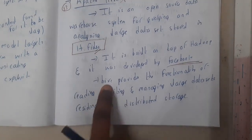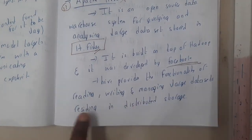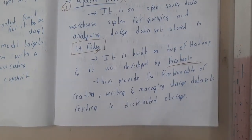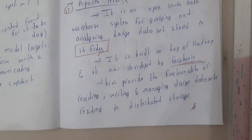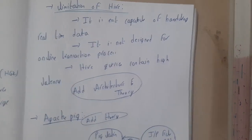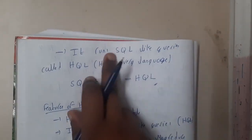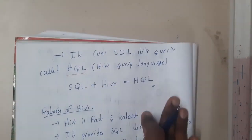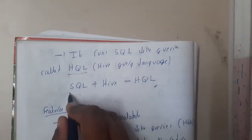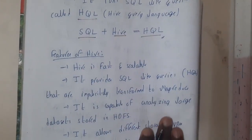Hive provides the functionality of reading, writing, and managing large databases residing in a distributed system. You might wonder what is the use of SQL if Hive does the same things. Hive works with the help of SQL — it runs SQL-like queries called HQL, which stands for Hive Query Language. So SQL combined with Hive gives you Hive Query Language.